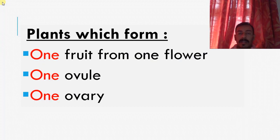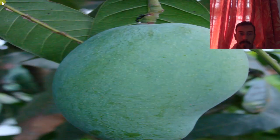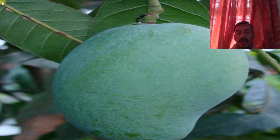So let's see the three main points. The plants and the simple fruits are formed in three main points: one fruit from one flower, one ovule, and one ovary. These are the main things you have to remember. Next, this is an example of simple fruit.